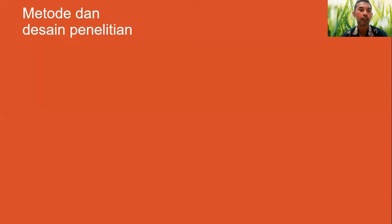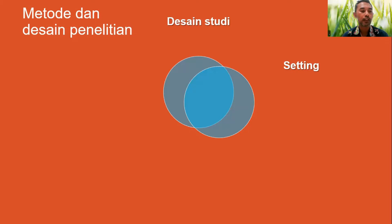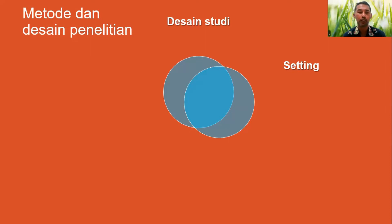Bagian berikutnya dari artikel jurnal adalah metode atau desain penelitian. Dalam bagian ini kita perlu menjelaskan desain dari studi kita secara garis besar, mungkin dalam satu dua kalimat. Kemudian kita perlu memikirkan settingnya: deskripsikan setting untuk penelitian, misalnya jenis komunitas, sumber komunitas, atau beberapa hal lain terkait setting penelitian tersebut — termasuk sistem atau hal-hal yang berkaitan dengan setting penelitian.